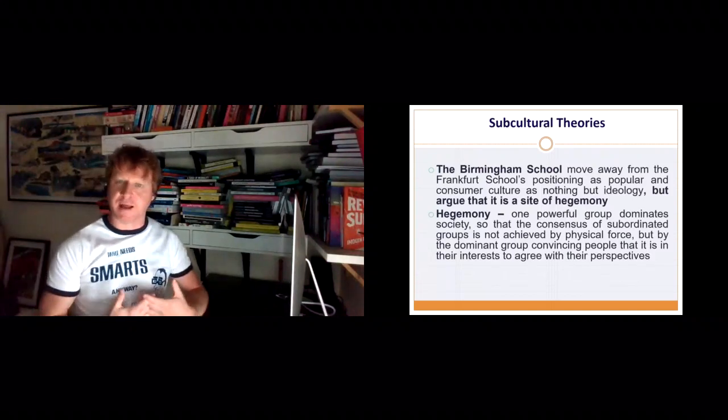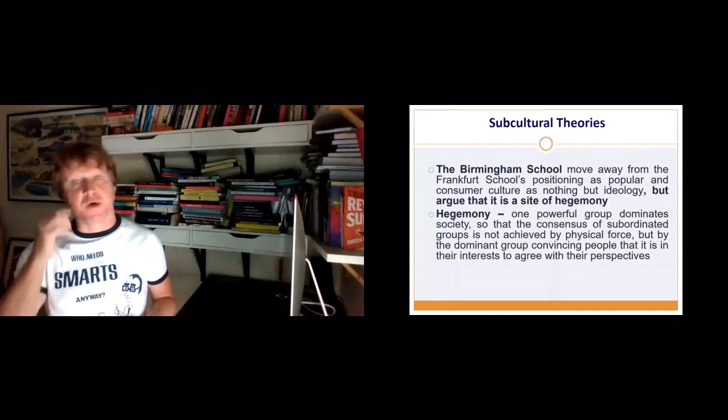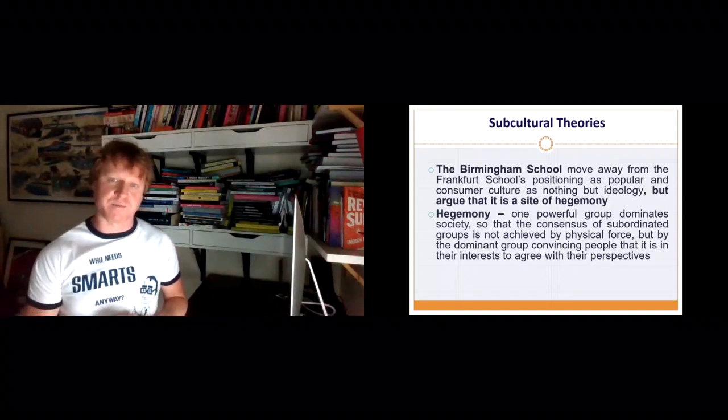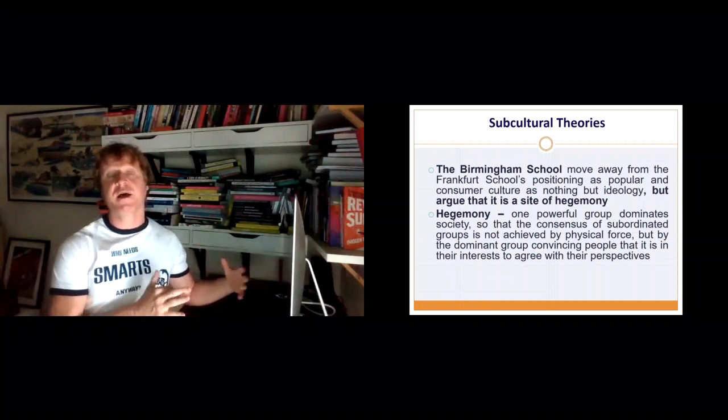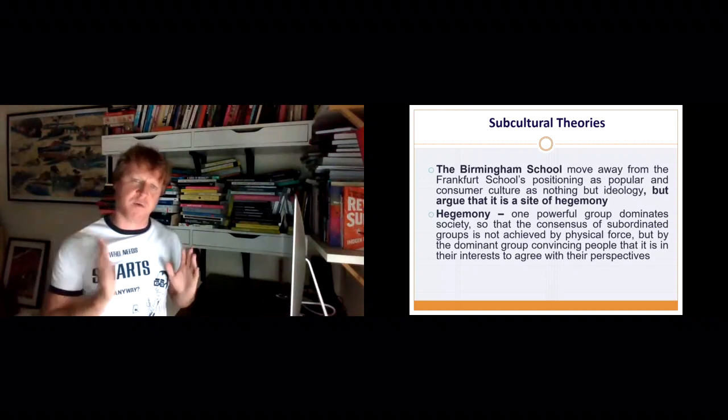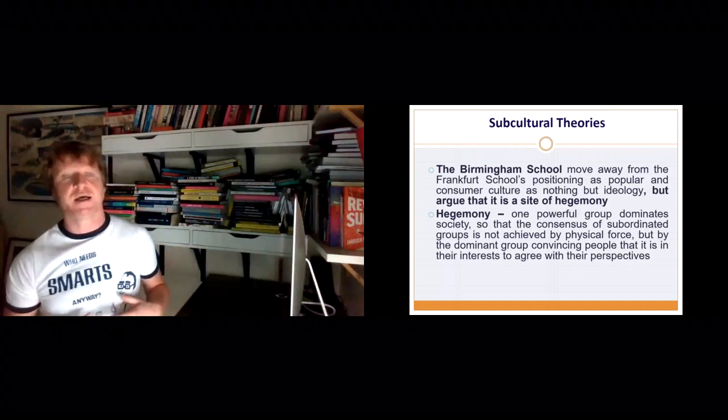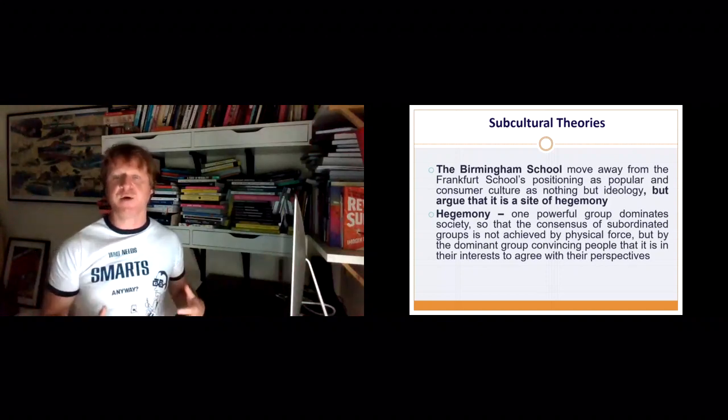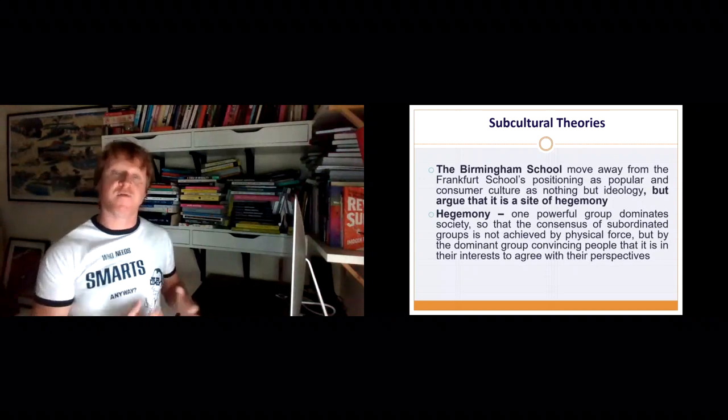So semiotic theories have been really useful for critically analyzing consumer culture and semiotics has been particularly used in what's called subcultural theories developed by the Birmingham School from the late 60s and early 70s in Birmingham in England. But these ideas have spread out throughout the sociological world. So where the Frankfurt School saw pop culture and consumer culture as nothing but a site of ideology, the Birmingham School bring on a more semiotic analysis and start thinking about the idea of hegemony. So hegemony here is the idea that powerful groups can't just repress the powerless. They have to have consensus and compromise every now and then. Otherwise, there will be a revolution. And so they argue that pop culture and consumer culture becomes this site of struggle between the dominant and the dominated.